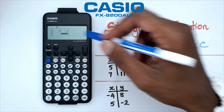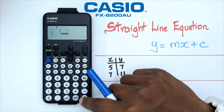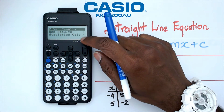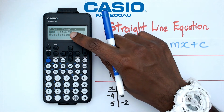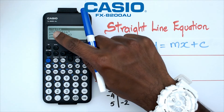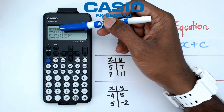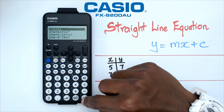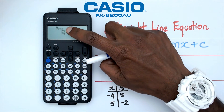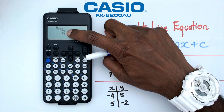Alright folks, so we've entered these two sets of coordinates. The next thing we're going to do is click on the EXE button. You're going to get a menu, and the one we're looking at is the reg results — that's the second one. Click on that, and then you should see something that says y equals a plus bx. The a plus bx is for a straight line equation. Click on it and you will get y equals a plus bx, with an a value of negative three and a b value of two.